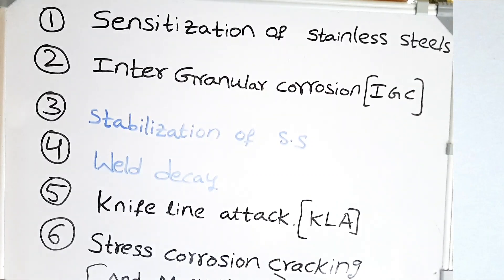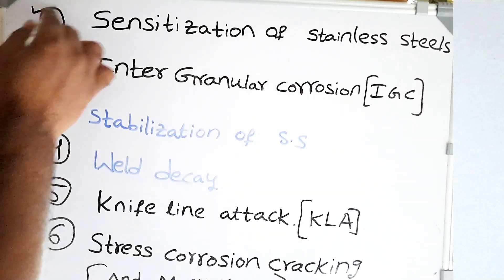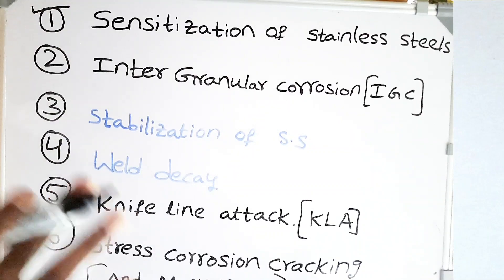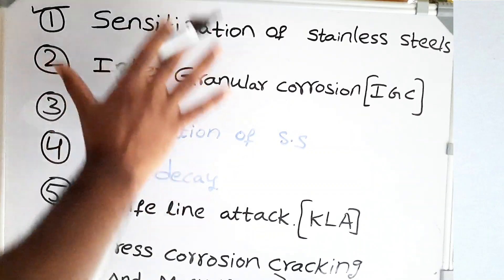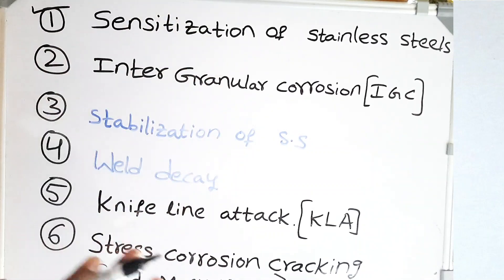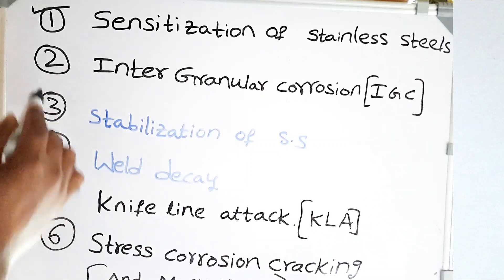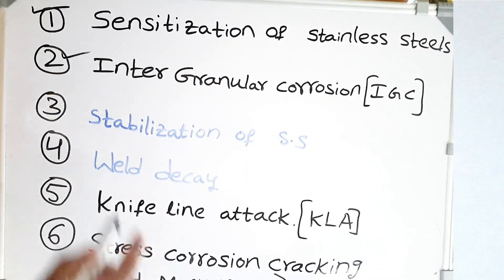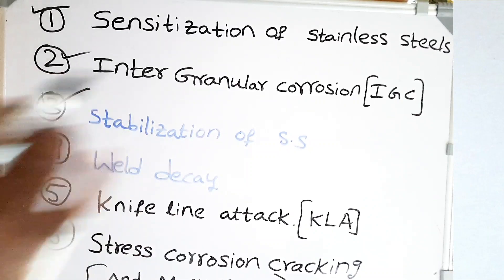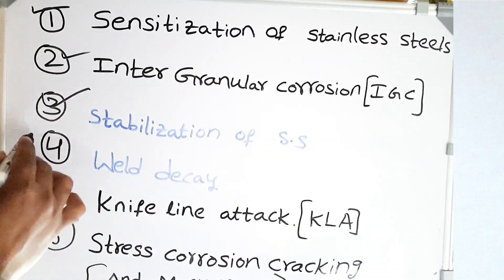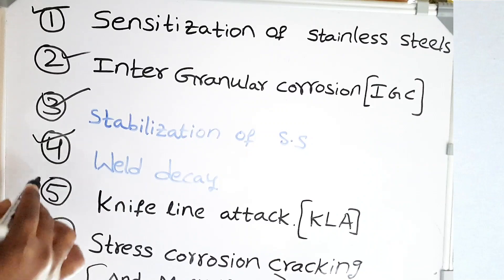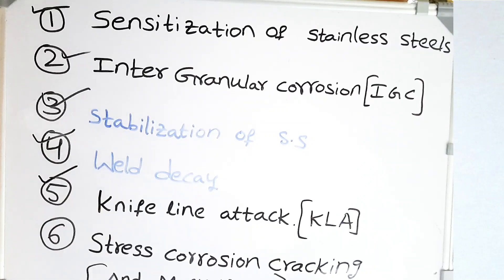Let's look at the contents of our video. First, we look at the sensitization of stainless steels. Whatever is written on this board are all related to each other. We are going to look at what is intergranular corrosion, what is stabilization of stainless steels, what is weld decay, what is knife line attack, and what is stress corrosion cracking and how these are all connected to each other.